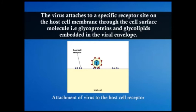First, attachment: the virus attaches to a specific receptor site on the host cell membrane through cell surface molecules — glycoproteins and glycolipids — which are embedded in the viral envelope. These glycoproteins have a sugar group attached to the protein, and glycolipids have a fat or lipid group attached.